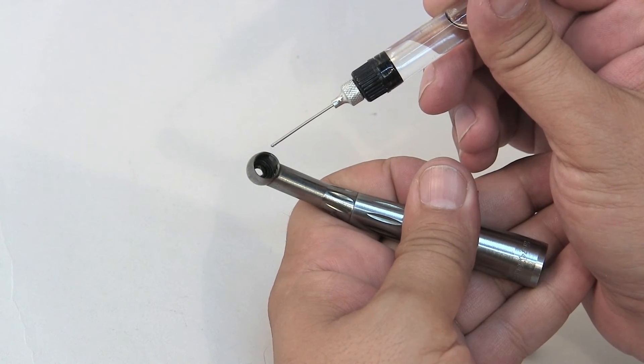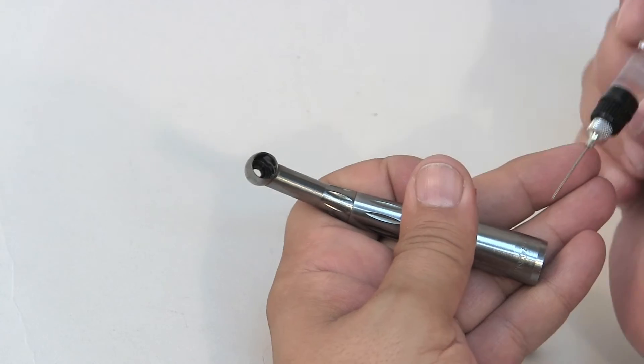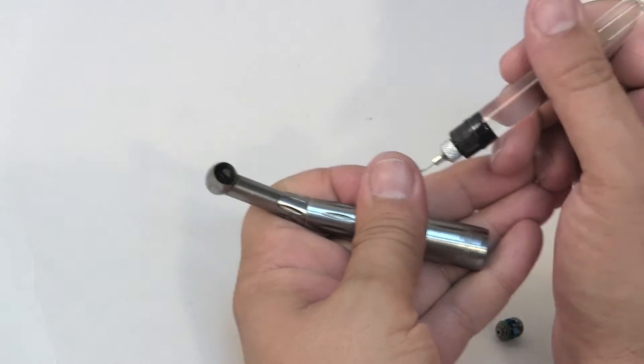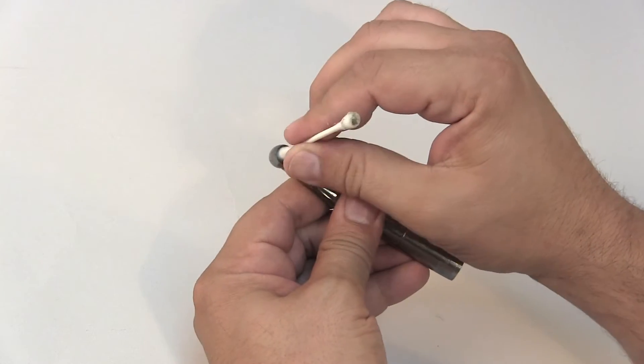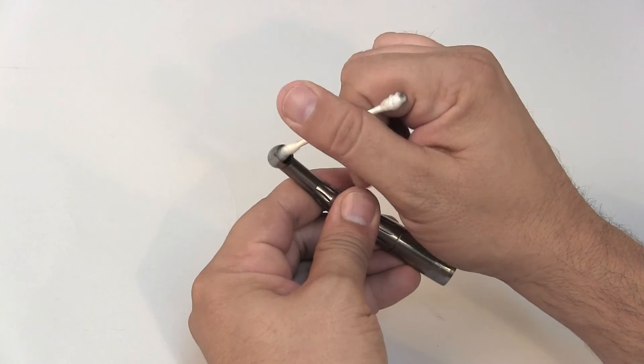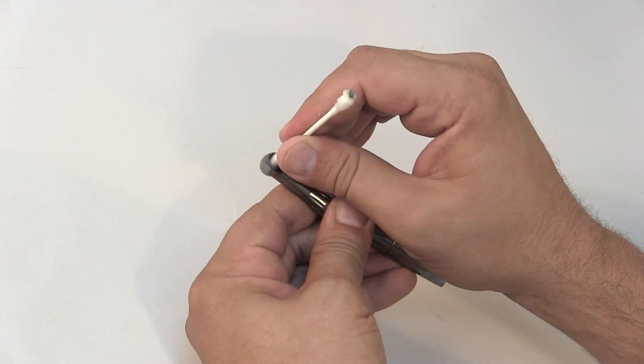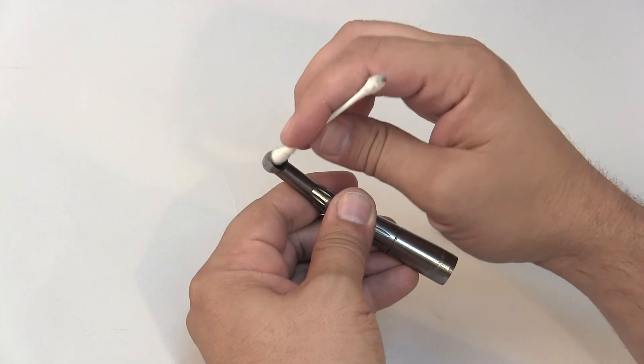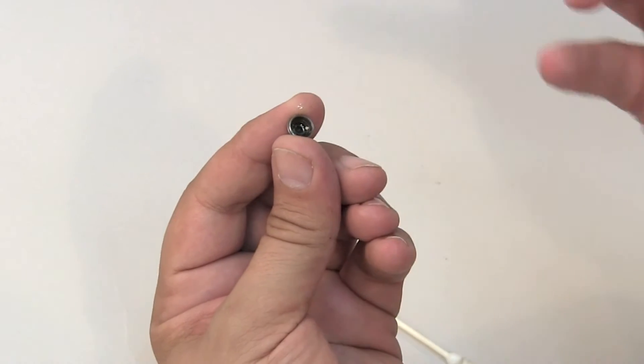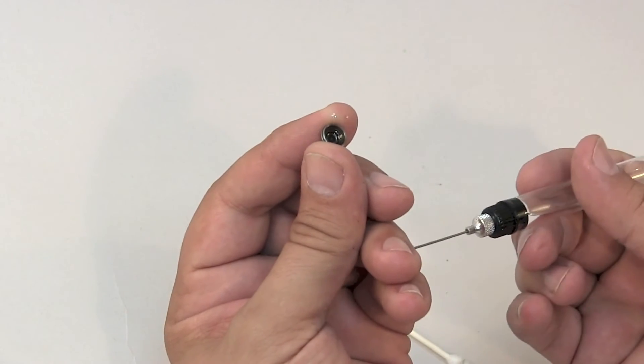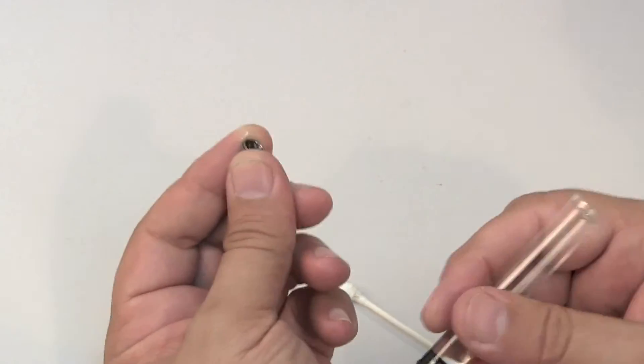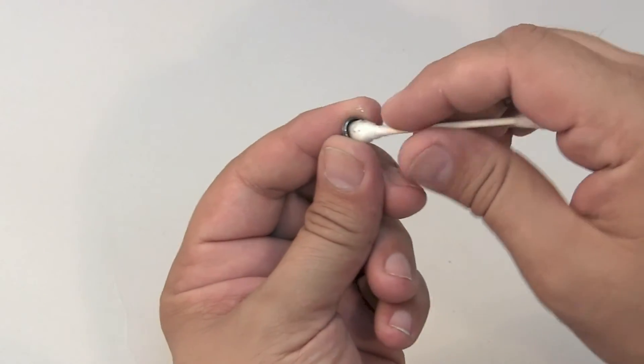Use handpiece lubricant and a cotton swab to clean the handpiece head and the end cap. You can use air from your air water syringe to blow out any cotton fibers that are left behind.